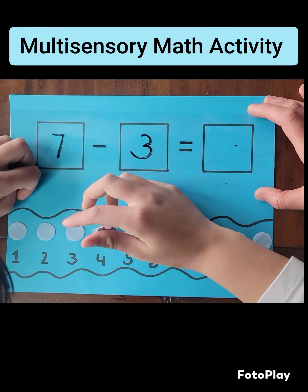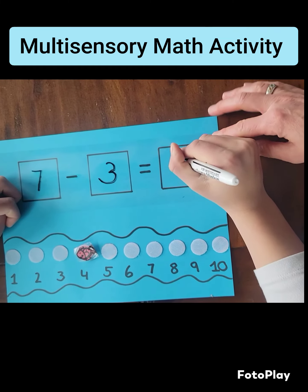Seven minus three equals four. You can write four in the box.